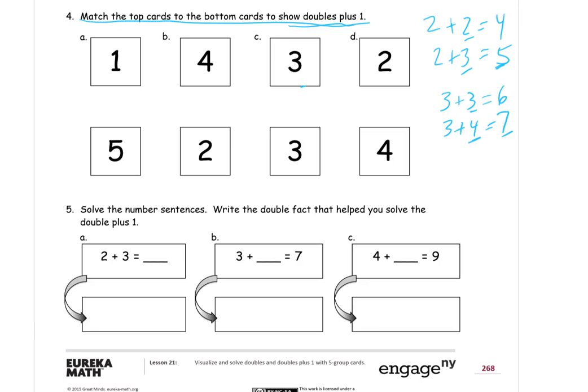So, I'm going to show doubles plus 1. So, 1 plus, it would be 1 plus 1 would be the doubles. So, what I'm looking for here is 1 plus 2. And 4 plus 4 would be the double for 4 here for B. So, I'm looking for 4 plus 5 for the double plus 1. And 3 plus 3 would be the double for 3, but it's plus 1, so I'm adding 3 plus 4. And 2 plus 2 would be the double expression for 2. So, but instead of adding, I'm making it double plus 1, so it's not 2 plus 2, it's 2 plus 3. And so, now we've matched the top cards to the bottom cards to show doubles plus 1.